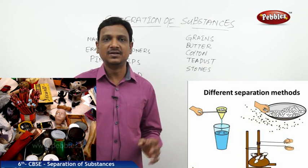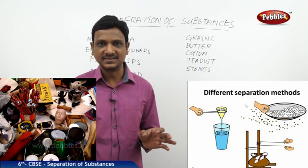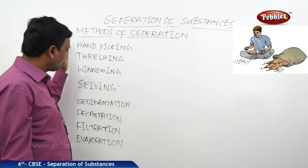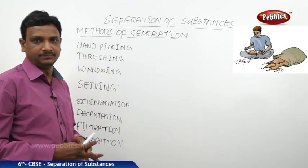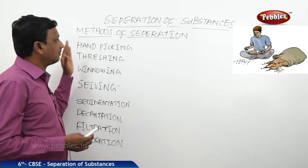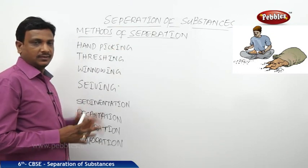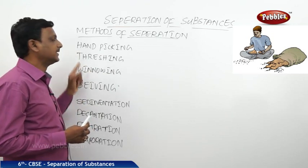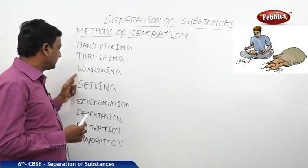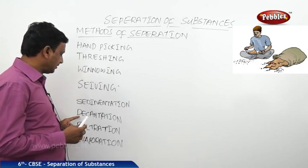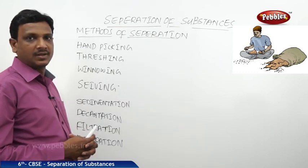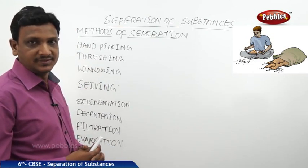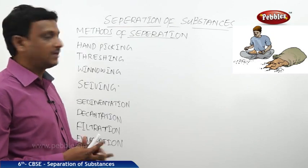Let us explore the various methods of separation of substances. We have a list of methods going from the simplest to the most complex: hand picking, threshing, winnowing, sieving, sedimentation, decantation, filtration, and evaporation. Let us understand the importance and application of each method — how the method is useful and in which circumstances we can make use of these methods.